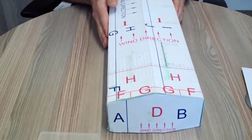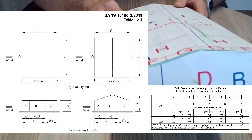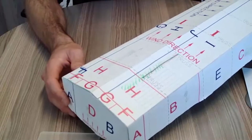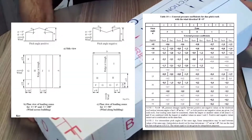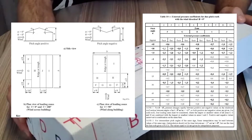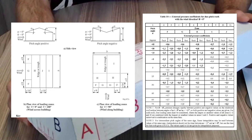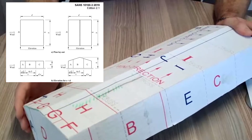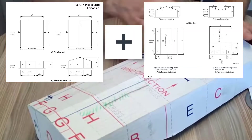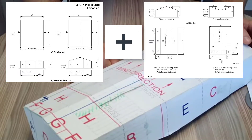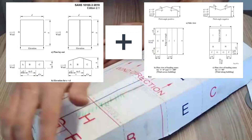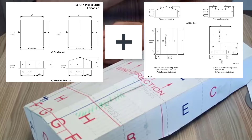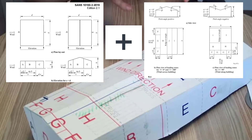Around the side of the building I've got zones A, B, C, D, E — those are the wall pressure coefficients. On the roof I've got F, G, H, I, and J if needed. The important thing to realize is that when you determine pressures on a building there are two sets of tables: one for the walls and one for the roof. They act together — you always have wall pressures plus roof pressures for a typical building, making up one entire building.